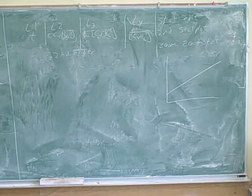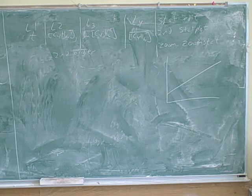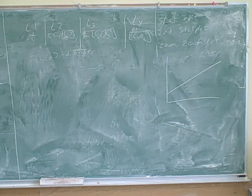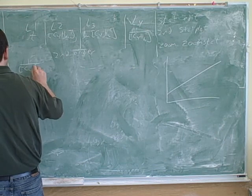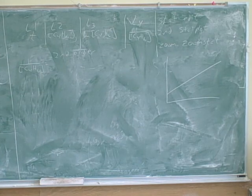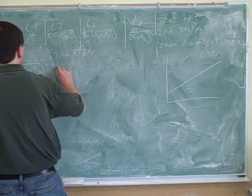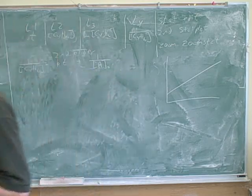So let's try writing out that rate expression. Here's our table. What are we using for A? The C4H6 concentration.